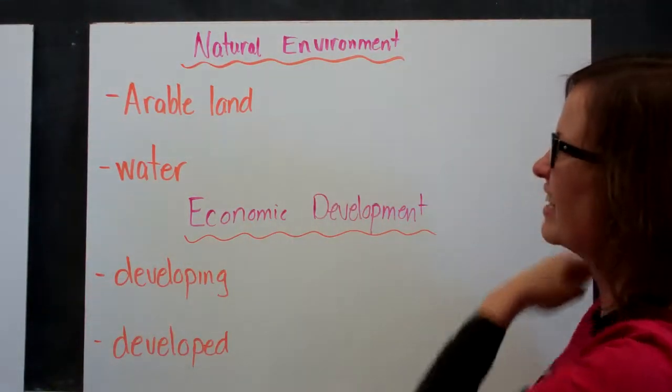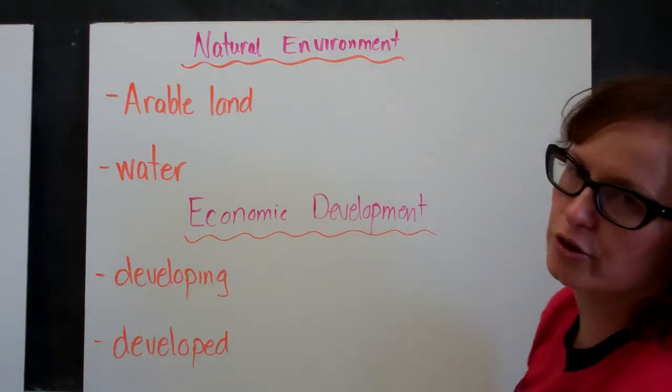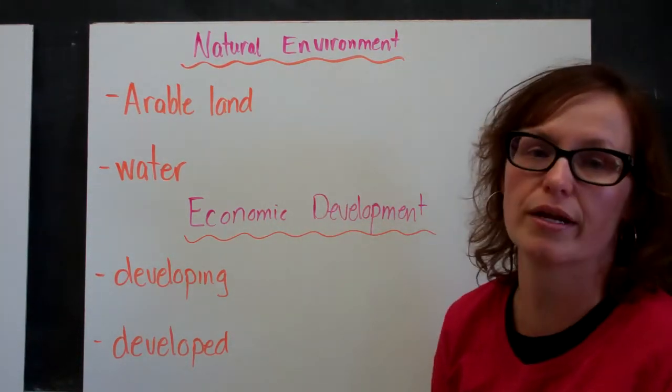So back to those patterns. The first one is natural environment, and there's two main categories here: one is arable land and one is access to water.